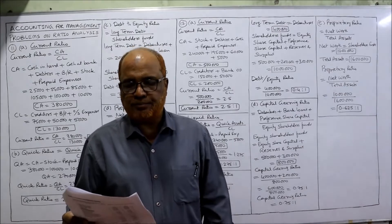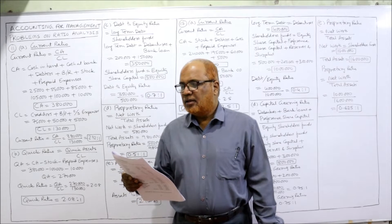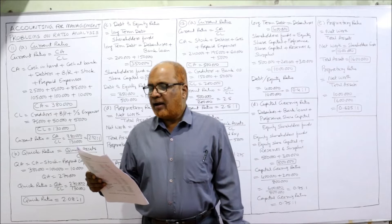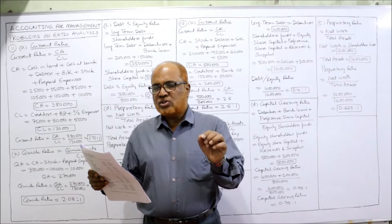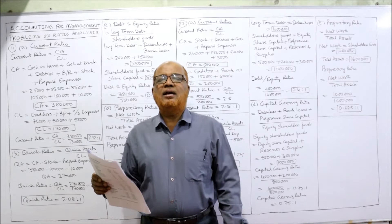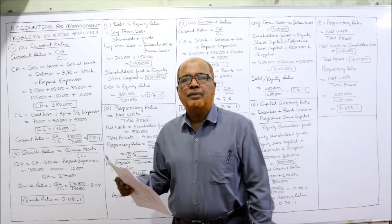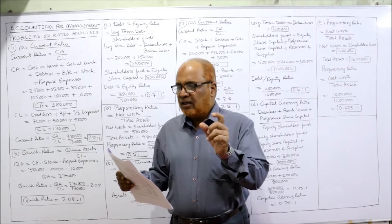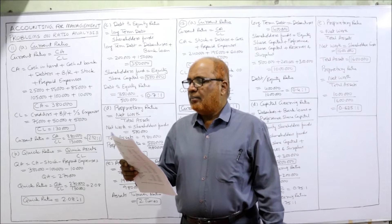Now see the 11th problem: following are the assets and liabilities of Krishna Limited as on 31st March 2019. The balance sheet is given. Liability side: equity capital 5 lakh, 5% debentures 2 lakh, bank loan 1 lakh 50 thousand, creditors, bills payable, outstanding expenses. The creditors, bills payable and outstanding expenses are current liabilities; bank loan and 5% debentures are long-term debt; and equity capital comes under equity shareholders fund.